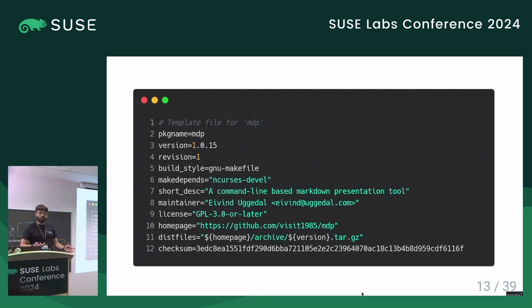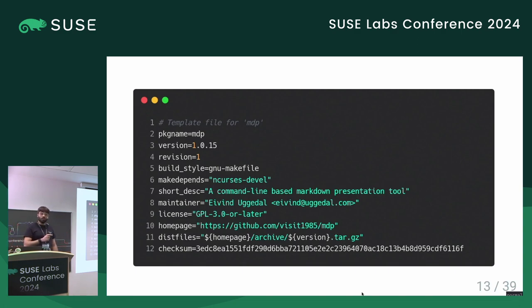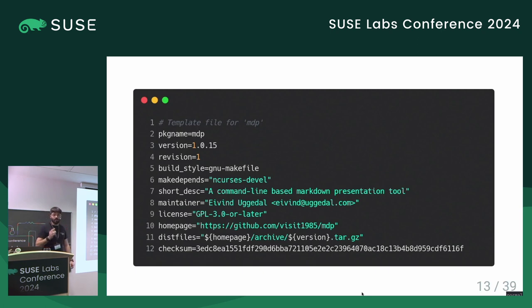Now let's see the Void Linux template for the same package. This is just metadata — we don't have anything else. There are also default functions defined for C packages that use a Makefile. On line 5, you can see we call 'build-style gnu-makefile'. We're saying this package builds using a Makefile, and we don't need to do anything else — calling make and make install with the right arguments is enough. This is very streamlined and minimal, and the build style concept is really powerful.